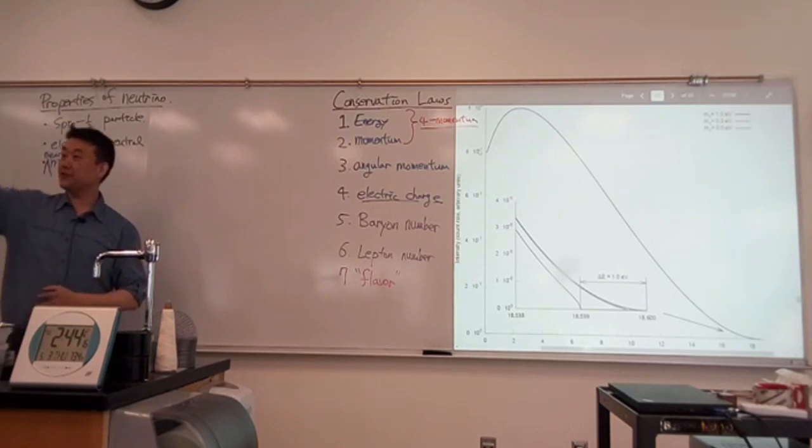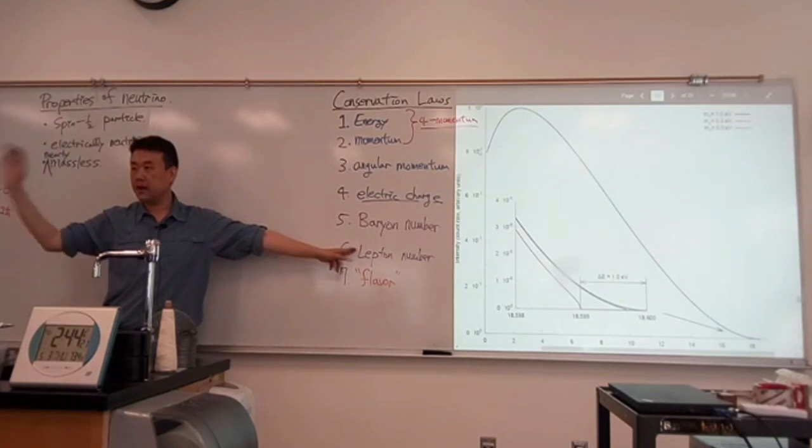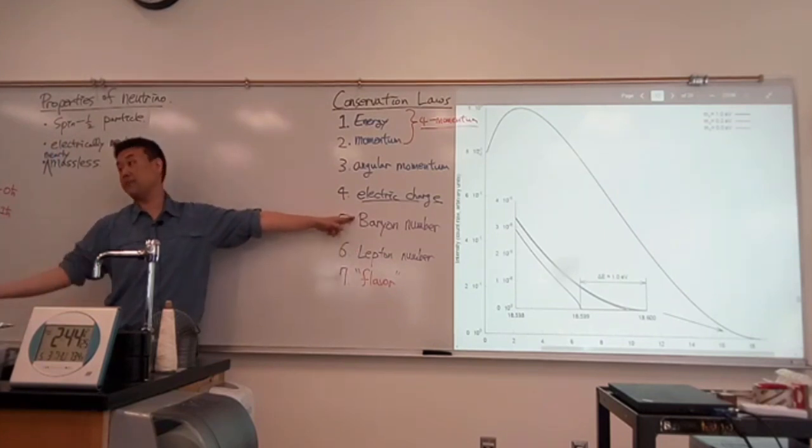How many here know Greek? So these numbers of baryon and lepton, they come from Greek. The etymology is Greek. And what baryon means is a heavy particle.